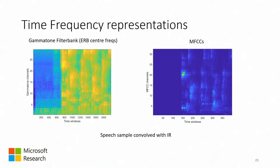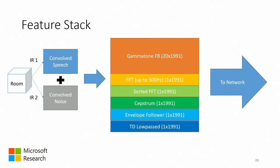We decided to combine all these features into what we call a feature stack. We put together representations using a gammatone filterbank, FFT, sorted FFT, cepstrum, an envelope follower, and a low-pass time domain signal. With a four-second speech signal, we had 64-bin time resolution with 32 bins of hop size, resulting in 1,991 time instances. Everything else was tailored to be the same size so everything fits together into a single network.